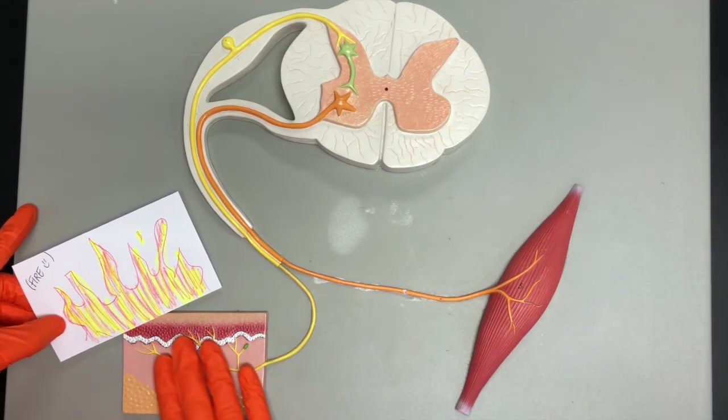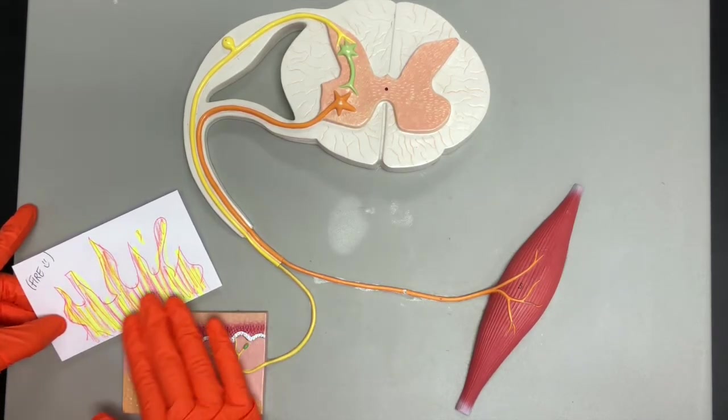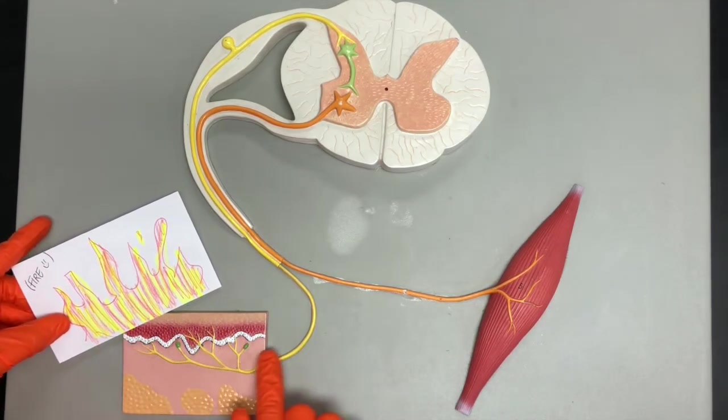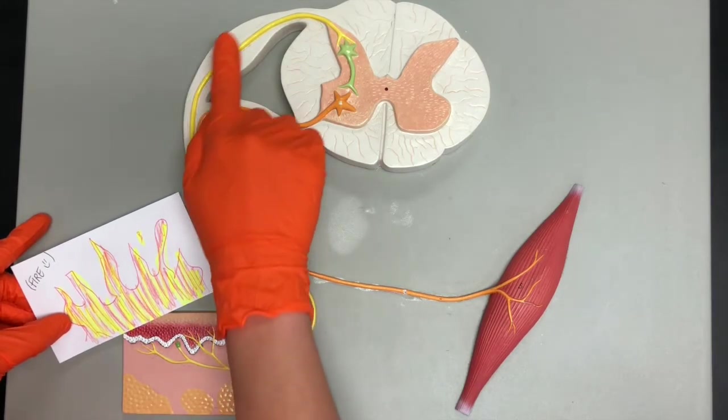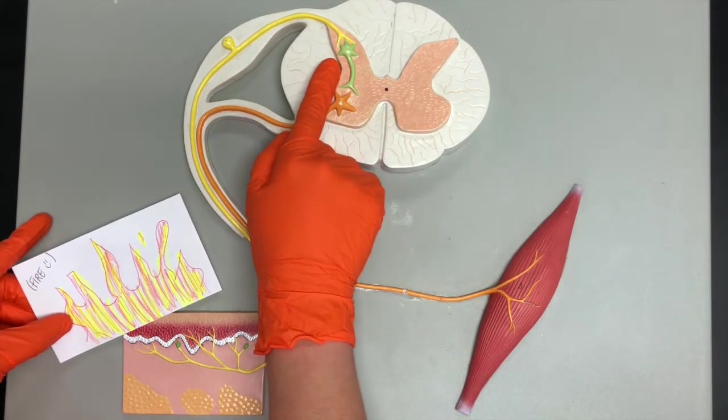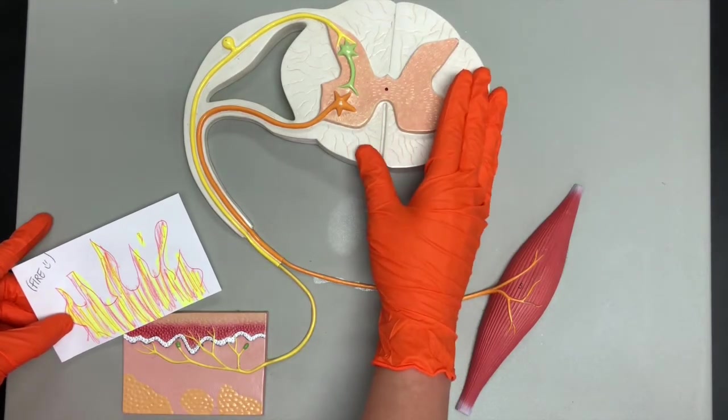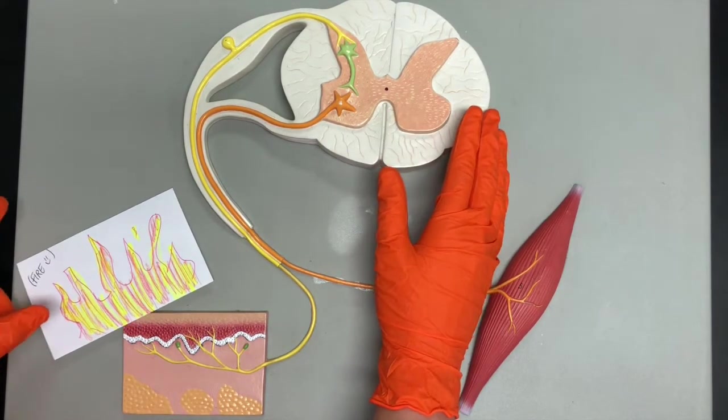So the dendrites are going to sense that painful stimulus and will send signals to the central nervous system. In a withdrawal reflex, we're looking at the spinal cord, so the spinal cord can actually take care of this entire example.